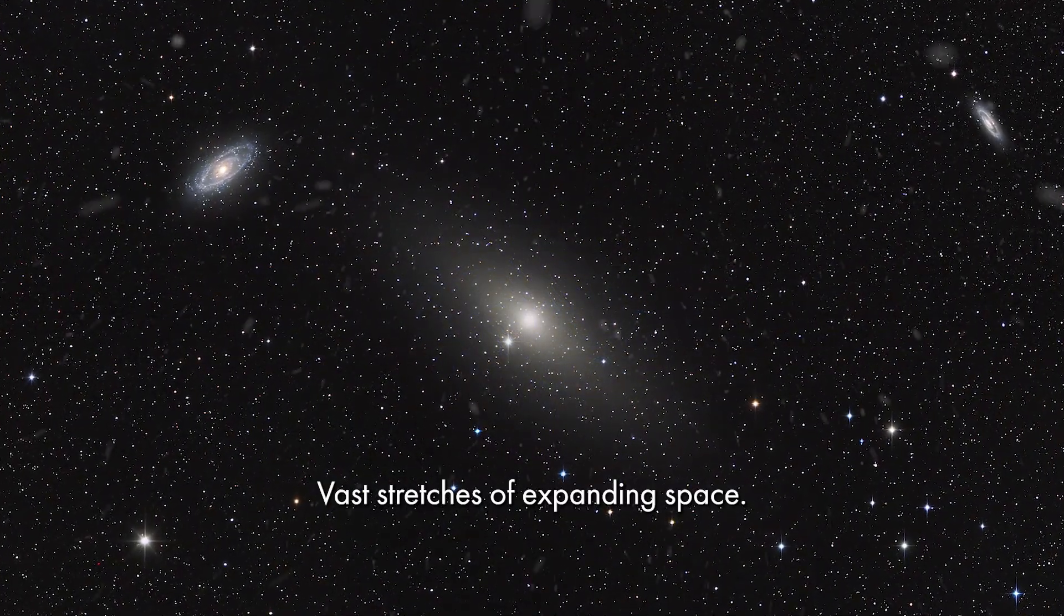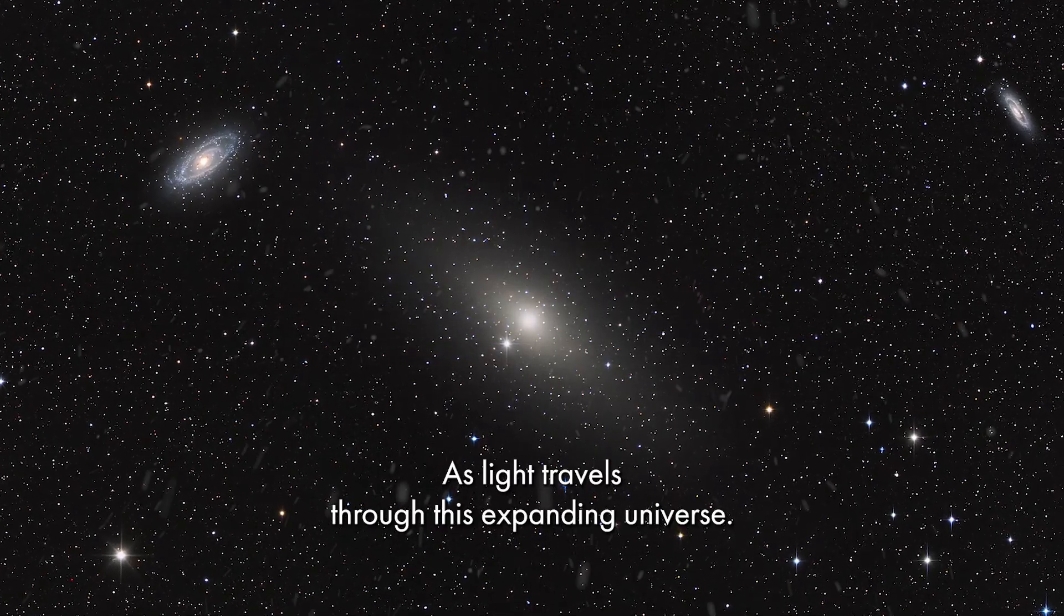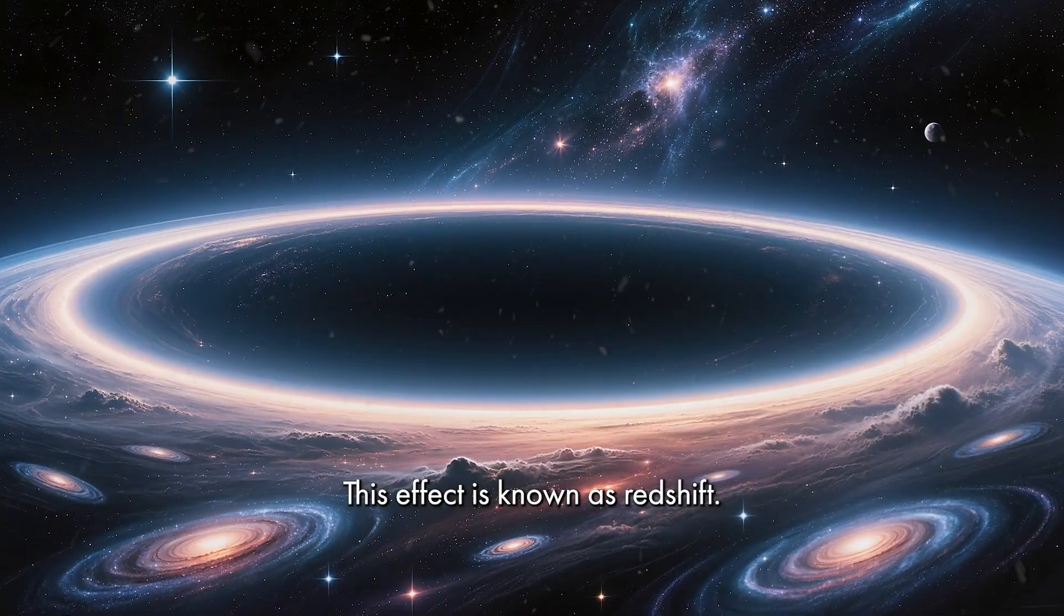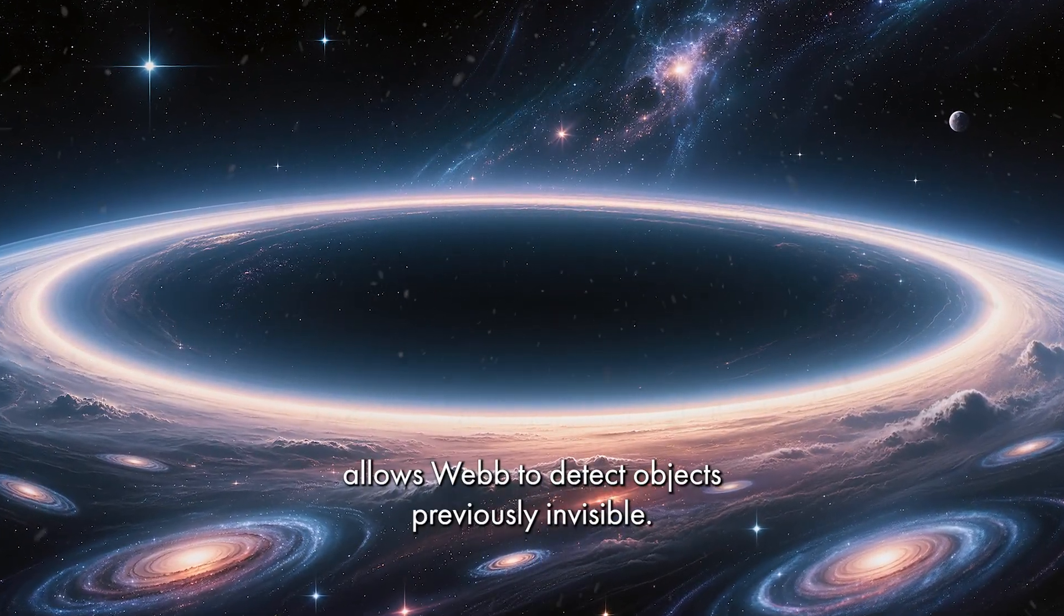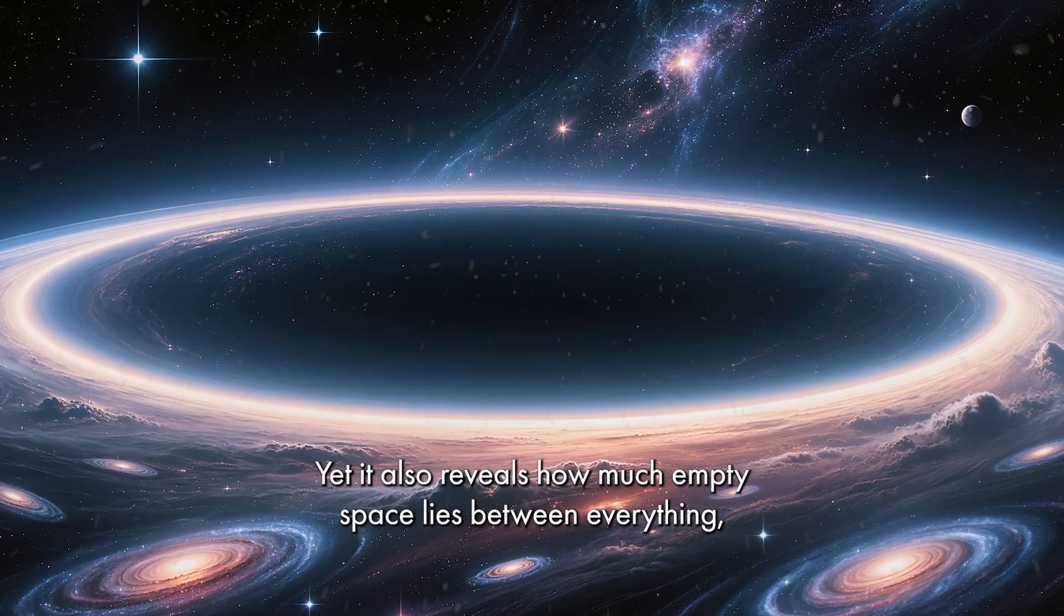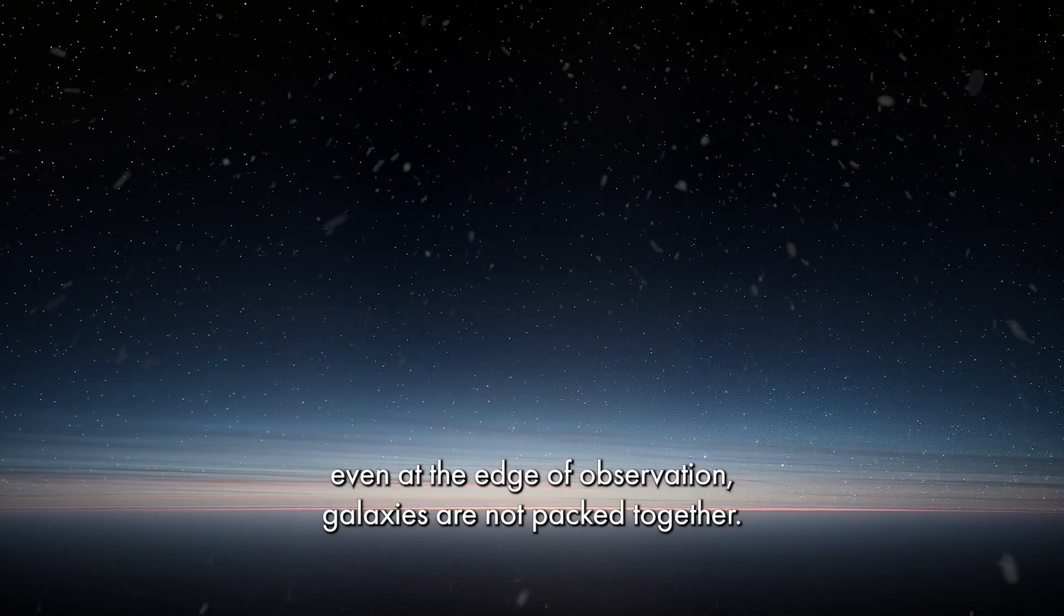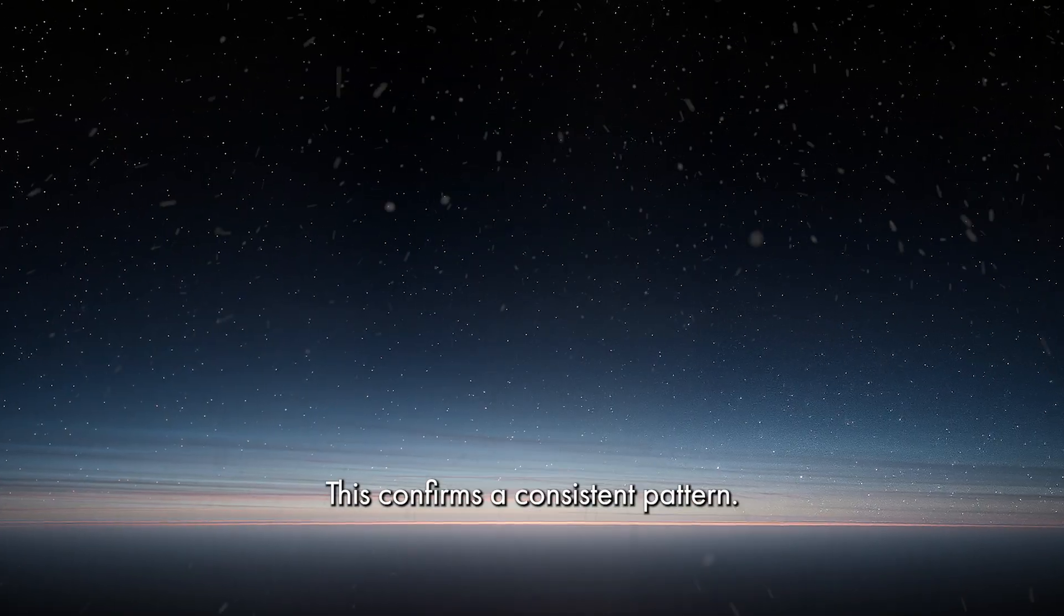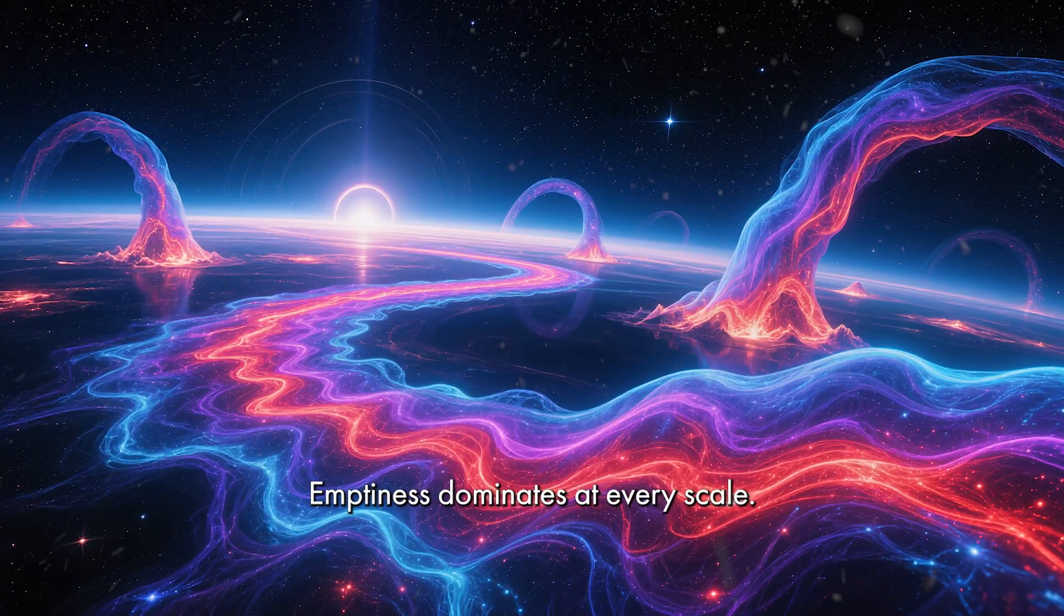Vast stretches of expanding space. As light travels through this expanding universe, its wavelength is stretched. This effect is known as redshift. Extreme redshift allows Webb to detect objects previously invisible, yet it also reveals how much empty space lies between everything. Even at the edge of observation galaxies are not packed together. They appear isolated, separated by darkness. This confirms a consistent pattern. Emptiness dominates at every scale.